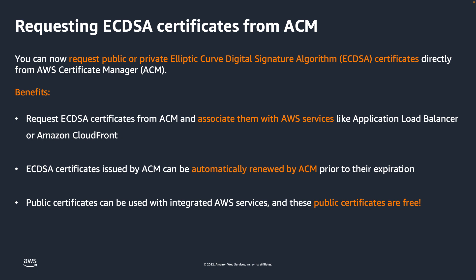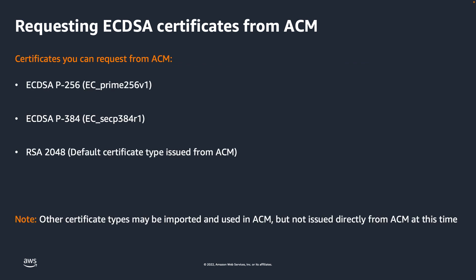Public certificates requested from ACM are free. You only pay for the resources you create to run your application. When you request a certificate using ACM, you can now choose to issue an ECDSA certificate instead of RSA. You can request both ECDSA P-256 and P-384 certificates from ACM. If you do not request an ECDSA certificate, ACM will issue an RSA 2048 certificate by default. In this video, we will briefly examine the difference between RSA and ECDSA certificates, discuss some important considerations when deciding which certificate type to use, and provide a simple demo showing how you can request an ECDSA certificate.